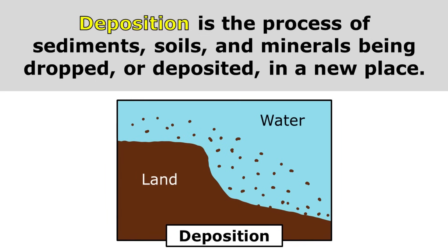Our final term is deposition. Deposition is the process of sediments, soils, and minerals being dropped or deposited in a new place. Sediments are carried by something like a river, and when they get to a new location where the water slows down, those sediments fall to the bottom. They settle out of the water and are deposited in a new place.